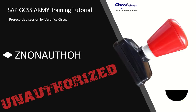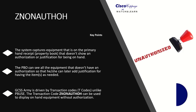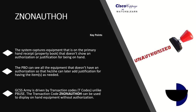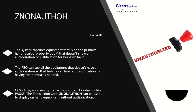This tutorial is designed to teach you how to access all the unauthorized property book equipment for a unit. Before we get into the lesson, there are some key points that need to be discussed. The first key point is that the system captures equipment that is on the primary hand receipt or property book that does not show an authorization or justification for being on hand.